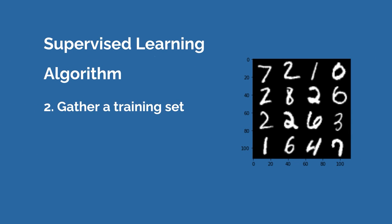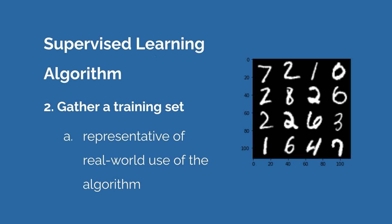Step two is to gather a training set. Perhaps you decide you're going to train your model on hand-drawn digits, so you'll give it hand-drawn digit images to train it to recognize digits. You then gather a training set of those images. The training set should be representative of real-world use — if I'm training an algorithm to detect hand-drawn digits, I don't want to give it typed digits; I want hand-drawn digits because that's what I'll use the algorithm for.